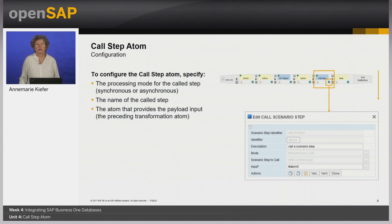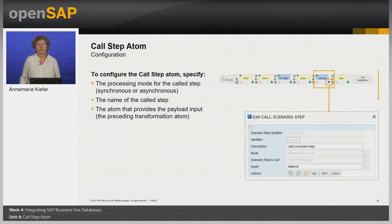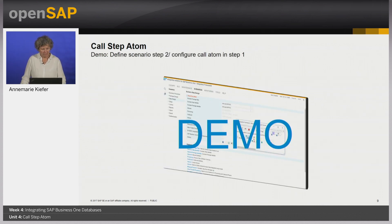To configure the call step atom in step processing, select the mode — synchronous in our case. In the selection window, enter the name of the called step, which is our second scenario step. We call it B2B B1 message. Define an atom that provides the payload to hand over your content to the call step, and define the name of a predecessor transformation atom. The integration framework hands over the result of the atom as the payload. Alternatively, you can define a subtree of the result or use an XPath expression. Note that the XML must be well-formed — it must have a single root tag.